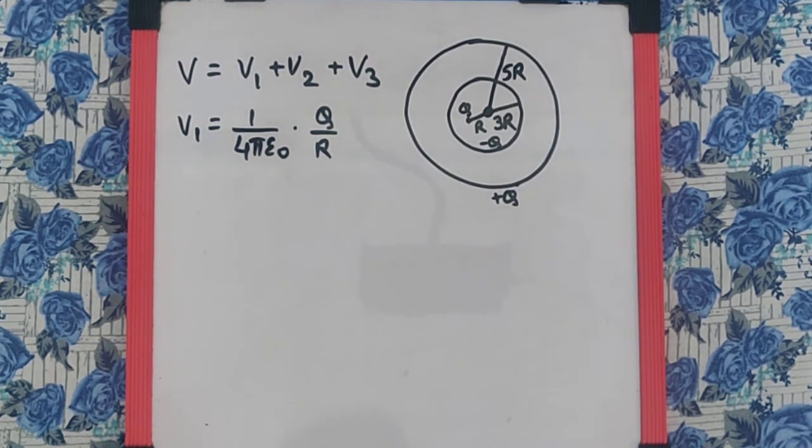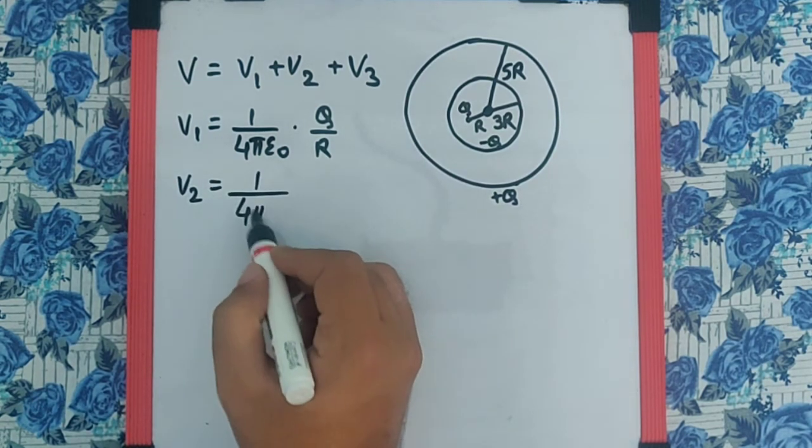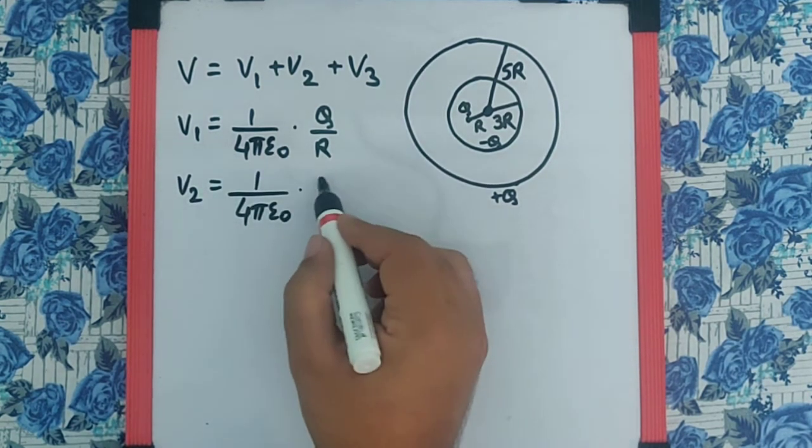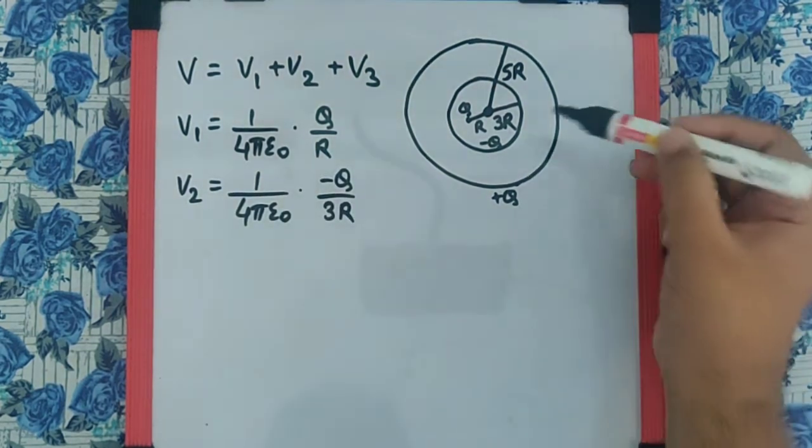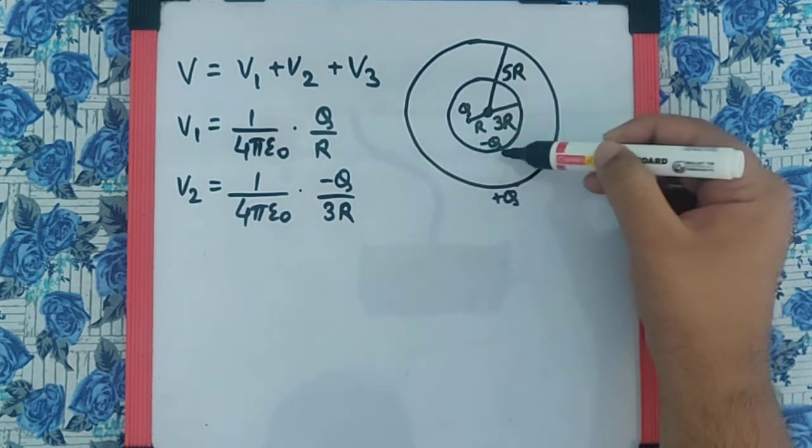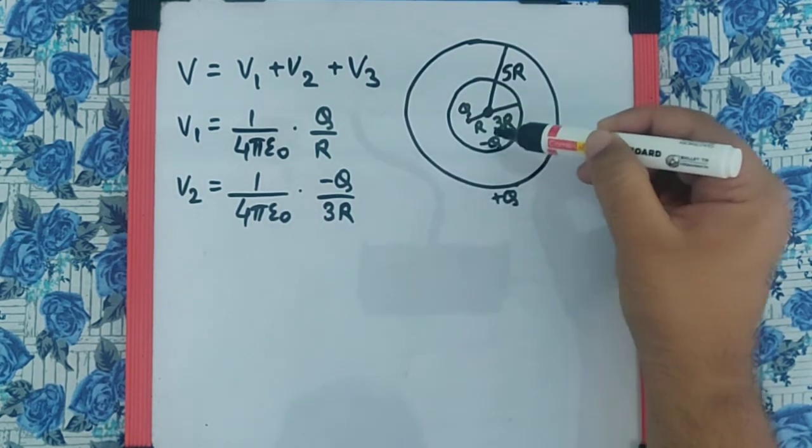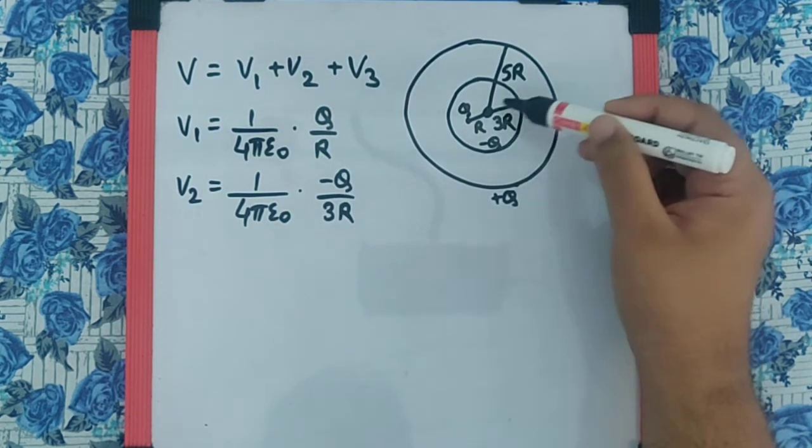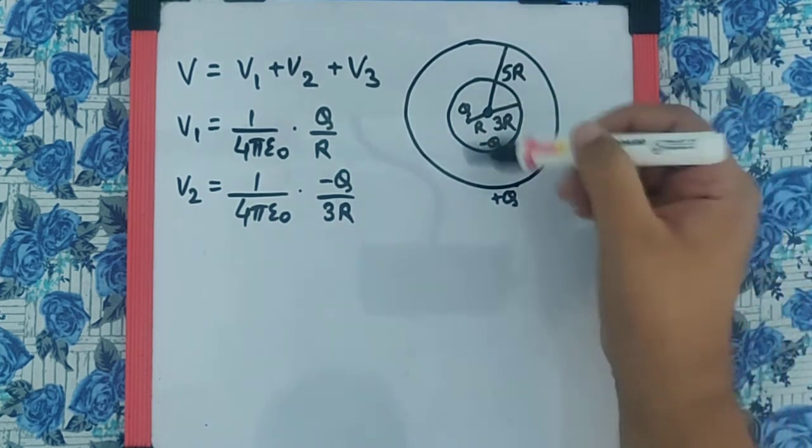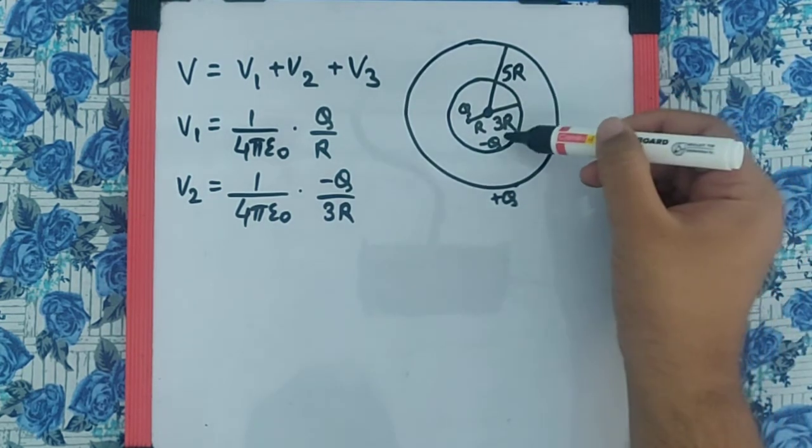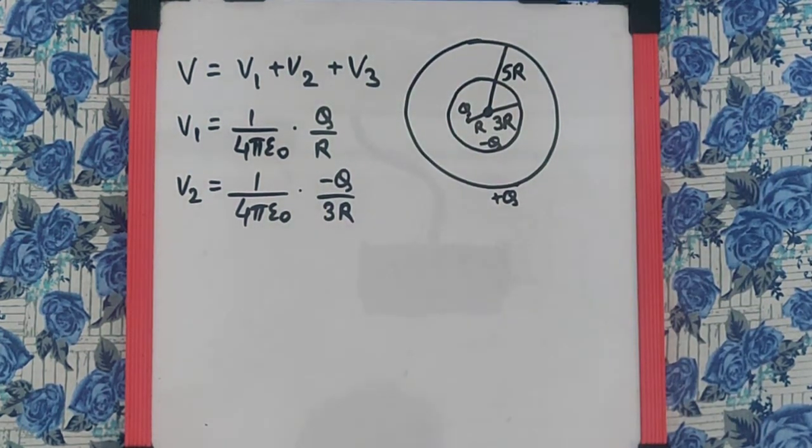Similarly, V2 is also going to be 1 upon 4pi epsilon 0, negative q by 3r. Because though this minus q is spread out throughout the spherical shell, but I can say all the charges on this inner shell is at the same distance from the point. And since it's a scalar quantity, the potential, we can directly add them. So, we can consider this point charge itself at a distance 3r. So, that's what we get the potential over here.